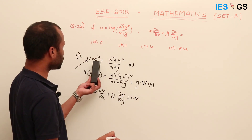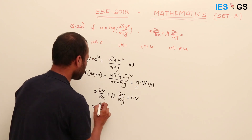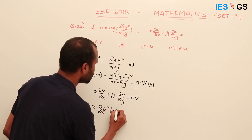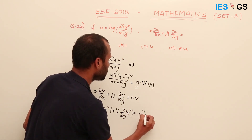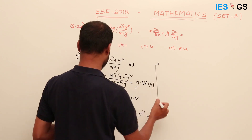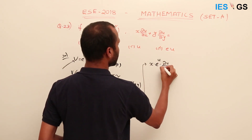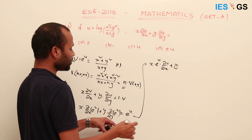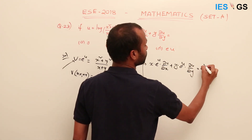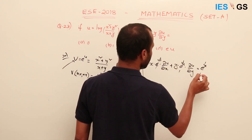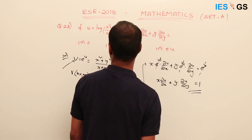Since v = e^u, substituting: x·∂(e^u)/∂x + y·∂(e^u)/∂y = e^u. This becomes x·e^u·∂u/∂x + y·e^u·∂u/∂y = e^u. Cancelling e^u from both sides: x·∂u/∂x + y·∂u/∂y = 1. The answer is option B.